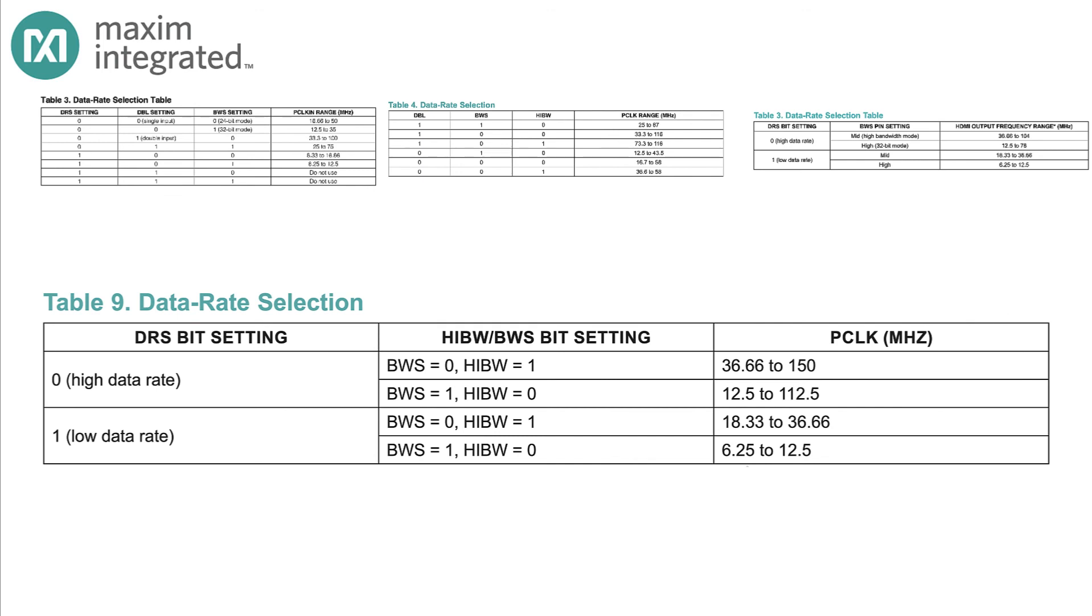Now, the last example supports pixel clocks from 6.25 MHz all the way up to 150 MHz. In this case, you get DRS, HIBW, and BWS, but not double mode.